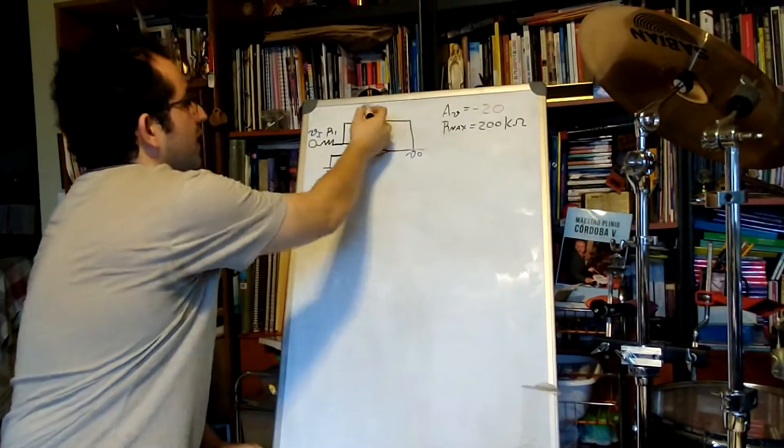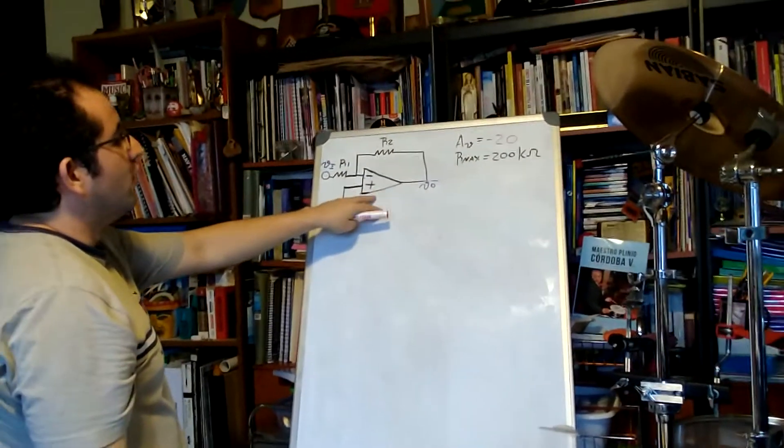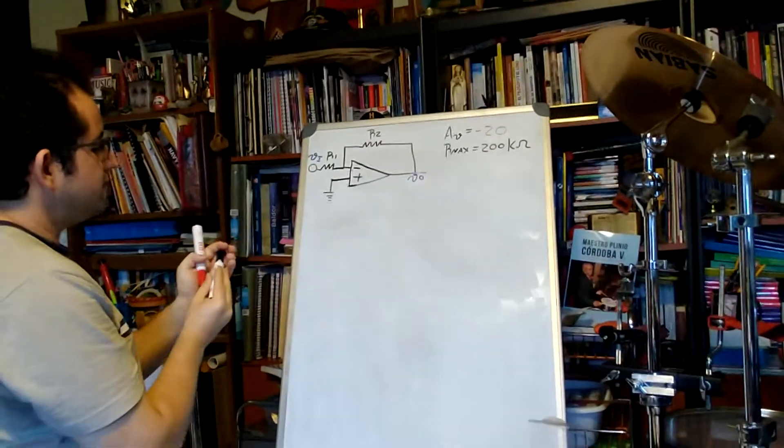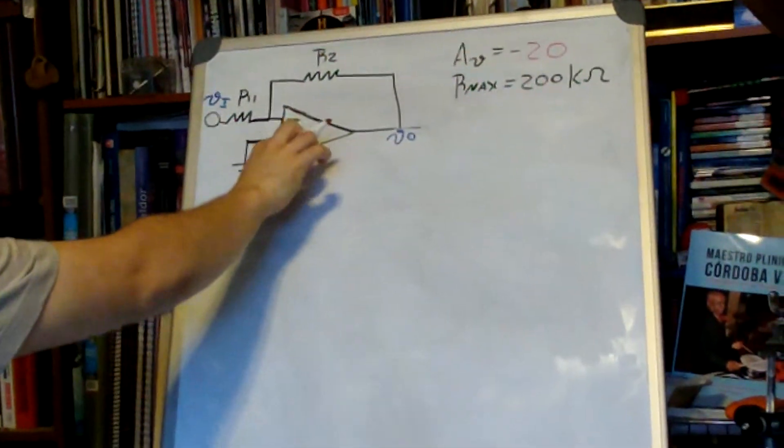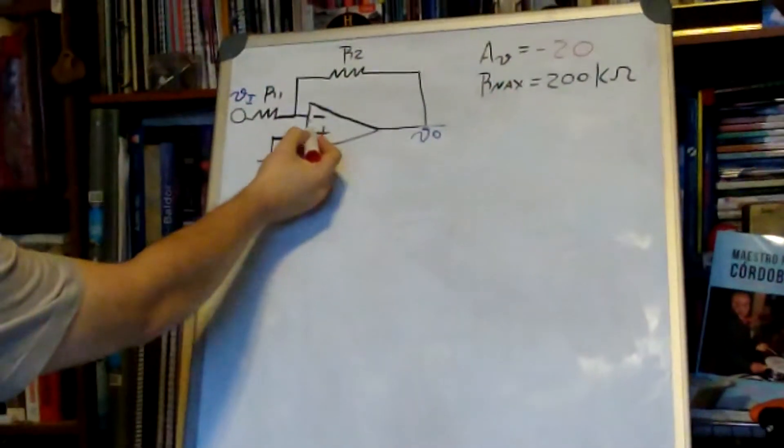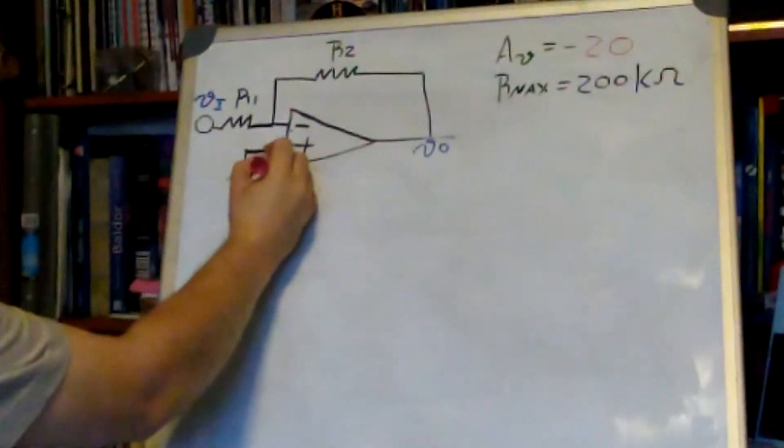First I'm going to analyze the operational amplifier. The current going inside the op amp is zero because the input impedance is high, so current I is equal to zero.